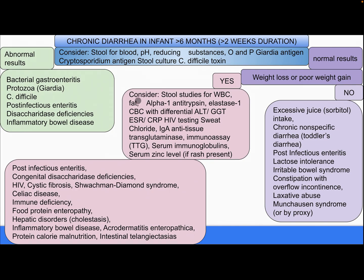If results are normal, is there weight loss or poor weight gain? If yes, consider stool studies for white blood cells, fat, alpha-1 antitrypsin, elastase, CBC with differential, ALT, GGT, ESR, C-reactive protein, HIV test, sweat chloride, IgA anti-tissue transglutaminase immunoassay, serum immunoglobulin, and serum zinc level. If abnormal, differential diagnosis includes post-infectious enteritis, congenital disaccharidase deficiency, HIV, cystic fibrosis, Shwachman-Diamond syndrome, celiac disease, immune deficiency, food protein enteropathy, hepatic disorder/cholestasis, inflammatory bowel disease, acrodermatitis enteropathica, protein-calorie malnutrition, and intestinal telangiectasia.